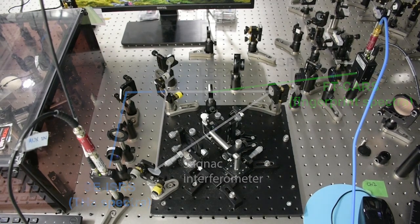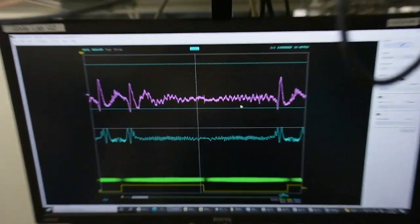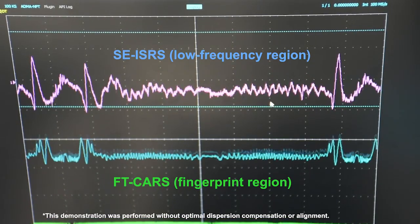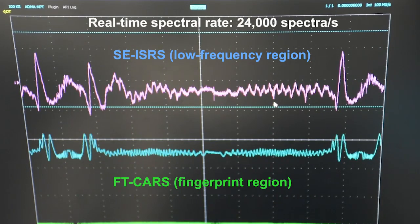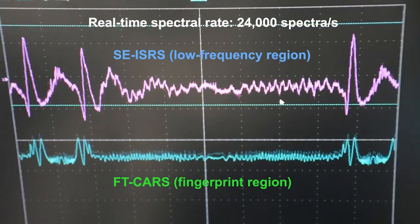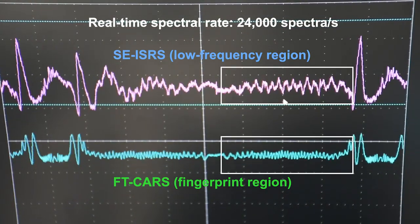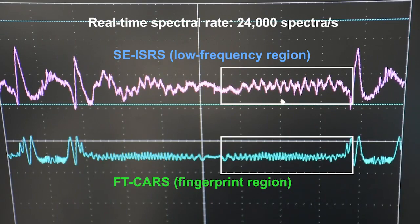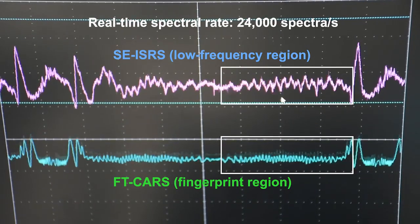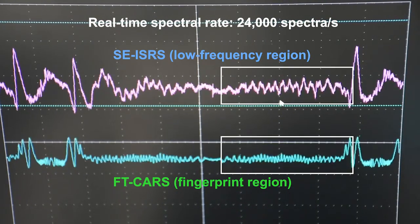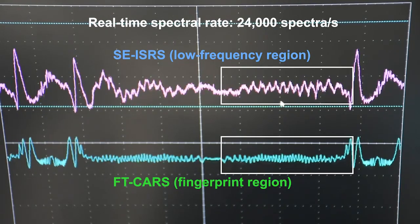Let's take a look at the oscilloscope with a dramatic Hollywood pan and zoom. Okay, these are the two signals of DIVS. At the top is SEISRS, at the bottom, FT-CARS. These are currently being detected at a real-time spectral rate of 24,000 spectra per second. Right away, you can see the dramatic difference in sensitivity to the detected Raman mode frequency. The top displays the lower frequency Raman modes, the bottom the fingerprint modes. This really is the strong point of DIVS.